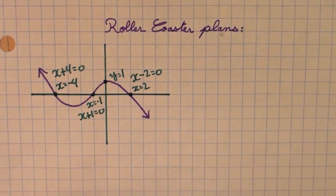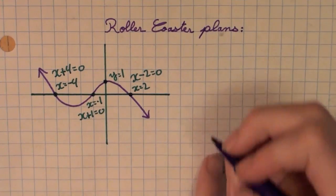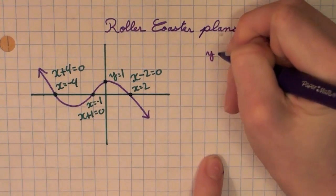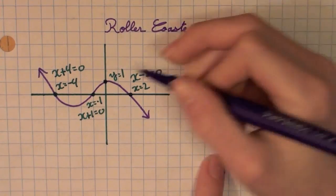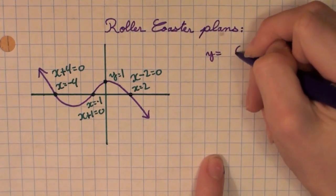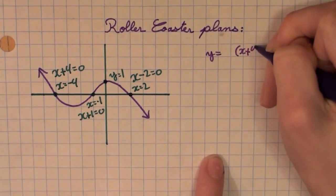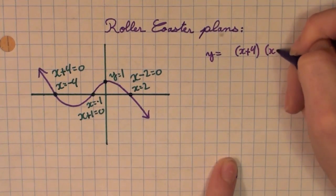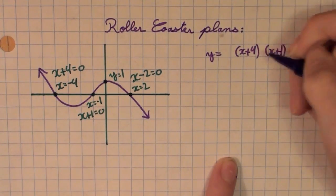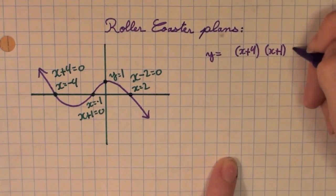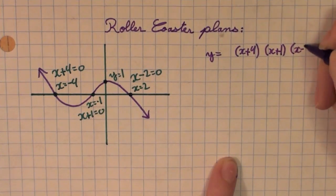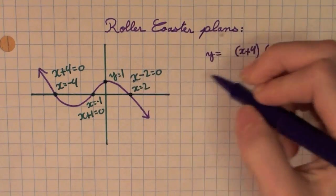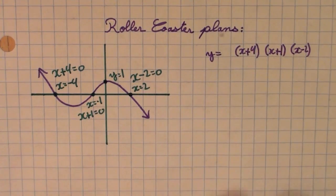Now that we have these factors, we can put them into an equation. Y equals X plus 4, X plus 1, and X minus 2. Also, since we want the Y-intercept to be 1, we put that at the beginning.